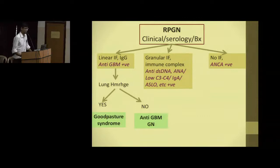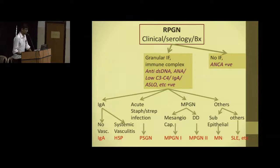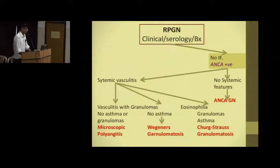If there is concurrent lung hemorrhage along with kidney failure in anti-GBM disease, it is called Goodpasture syndrome. If only the kidneys are involved, it is called anti-GBM disease. With granular immunofluorescence and positive inflammatory markers, causes include HSP, PSGN, membranoproliferative glomerulonephritis, and SLE. If there is no immunofluorescence but ANCA is positive, it is called ANCA glomerulonephritis, with systemic associations including microscopic polyangiitis, Wegener's granulomatosis, and Churg-Strauss syndrome.